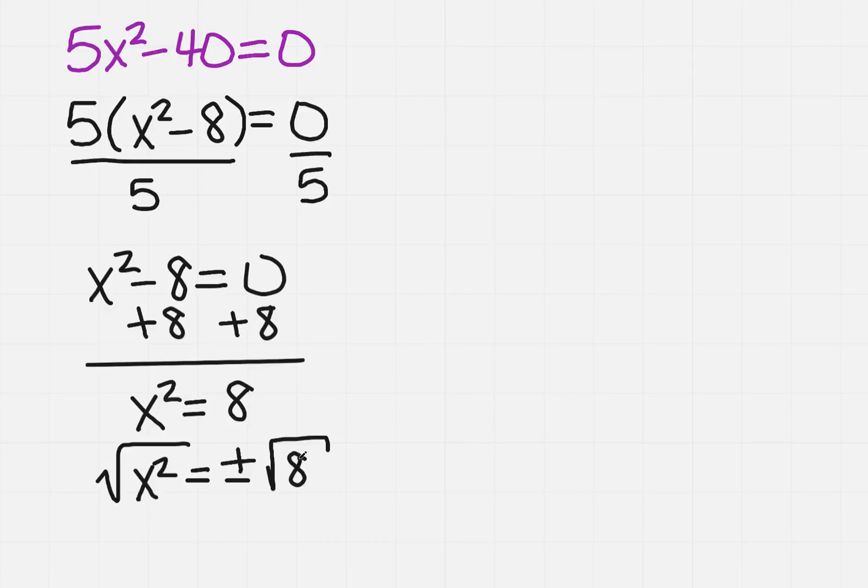The square root of 8 has a perfect square in it, so we're going to have to simplify this. I know that 8 is 4 times 2. 4 is a perfect square, so I'm going to get plus or minus 2 square root of 2 for x.